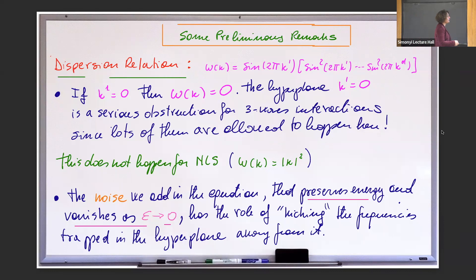This omega equals zero happens too often — it's at least on the whole hyperplane. In a sense, lots of interactions of frequencies are going to be trapped on this hyperplane. And Hani and Vu don't have a way of kicking these frequencies out of the hyperplane. You just don't see the wave kinetic equation there, or at least it's not easy to extract it.